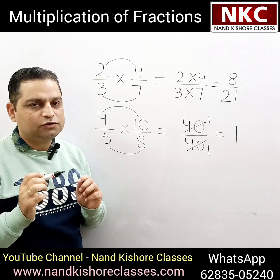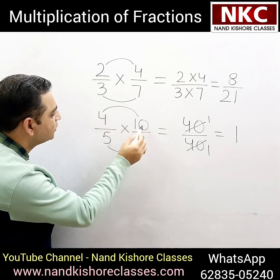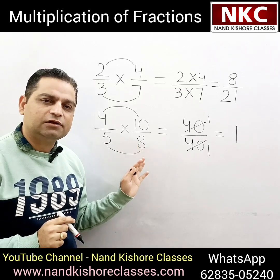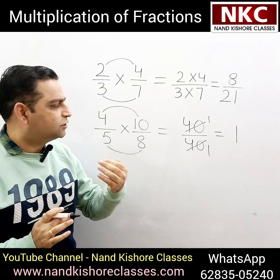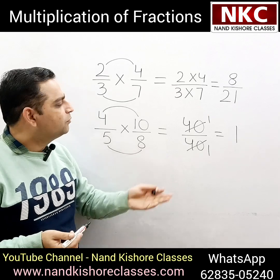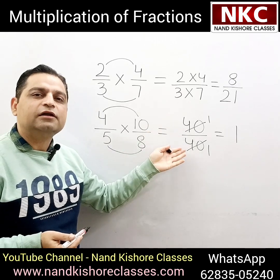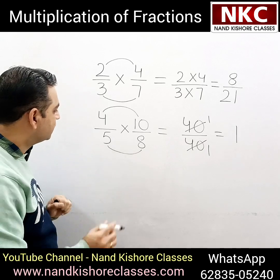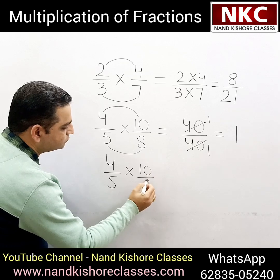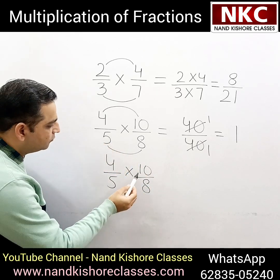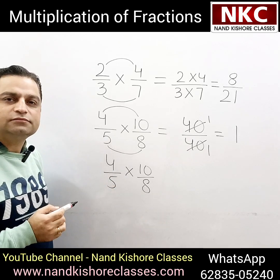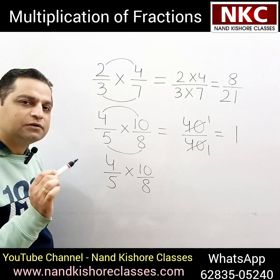But what I want to teach now is that direct multiplication is not required always. If you can cancel a few terms before multiplication, you can do that to avoid big calculations. Here you were getting 40 over 40 because I had taken a simple example, but you may get different and difficult values. Reducing them into lowest form might be difficult. So the same concept of reducing into lowest form can be used — any number from the numerator can be cancelled with any number from the denominator.